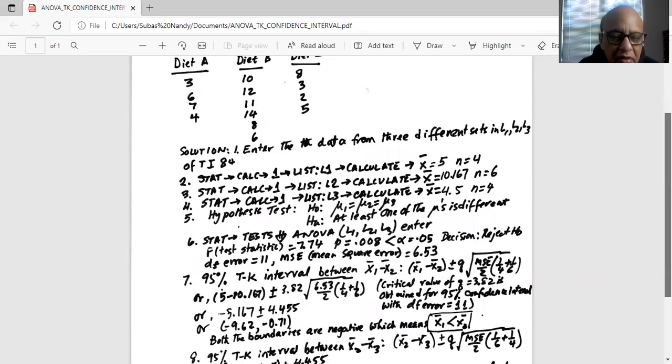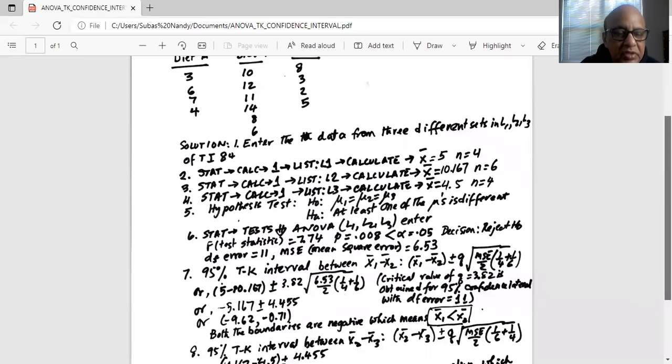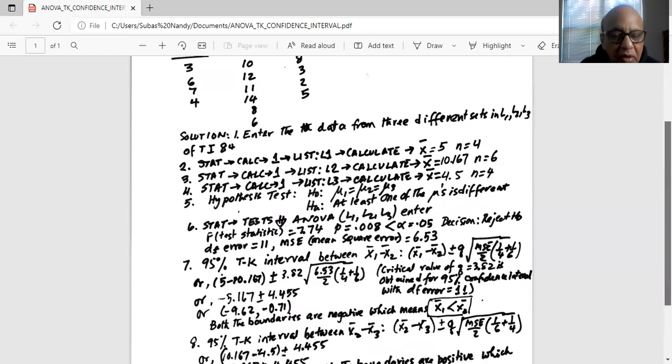If we do the calculation correctly, it is minus 5.167 plus minus 4.455. So if we do the negative 5.167 minus 4.455, we get minus 9.62, which is the lower boundary. And if we do 5 minus 5.167 plus 4.455, we get the upper boundary, which is minus 0.71. Notice both boundaries are negative, which means x1 bar is less than x3 bar.